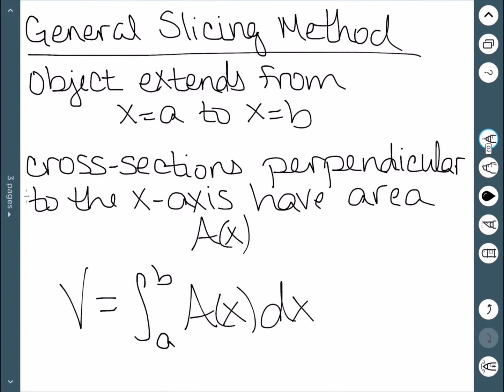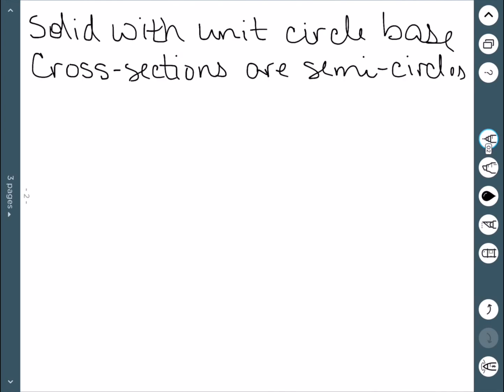This gives us the idea that if we just look at individual cross sections and take their area, we can integrate over all of those areas to get the volume. Here's our first example: we have a solid with the unit circle as the base, and cross sections are semicircles. This object is just a half of a sphere with radius 1, so we can have some idea of testing to see if we got the correct answer.